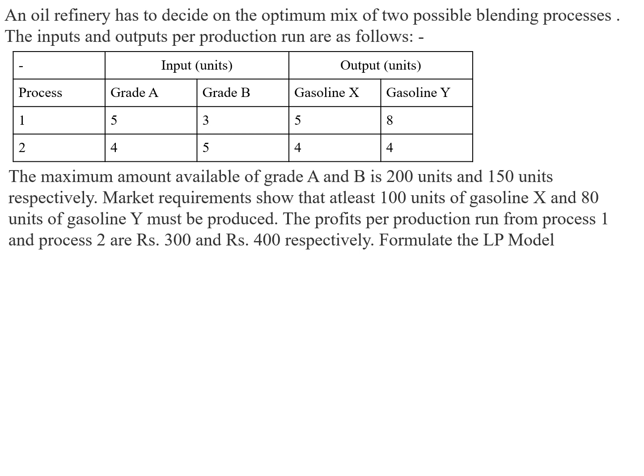For process 1 and process 2, the input is based on grade A and grade B given in units, and the output is given for gasoline X and gasoline Y in units. For process 1, the input is grade A: 5 units, grade B: 3 units, and the output is gasoline X: 5 units, gasoline Y: 8 units. For process 2, the input is grade A: 4 units, grade B: 5 units, and the output is gasoline X: 4 units, gasoline Y: 4 units.